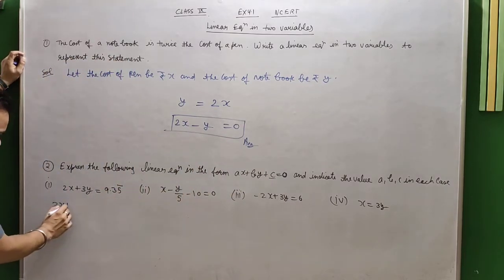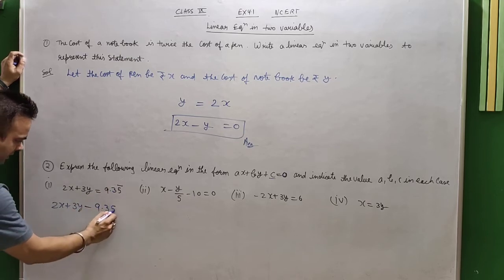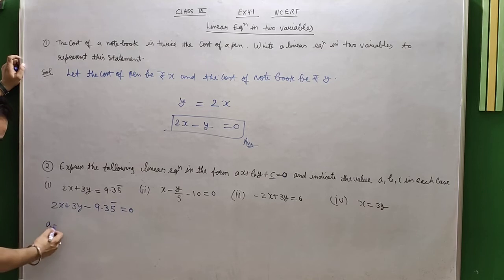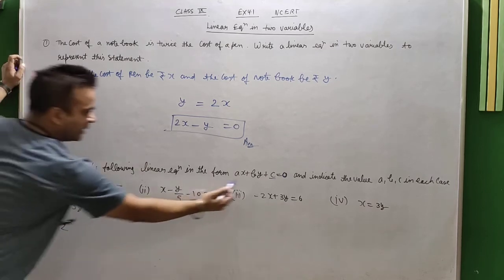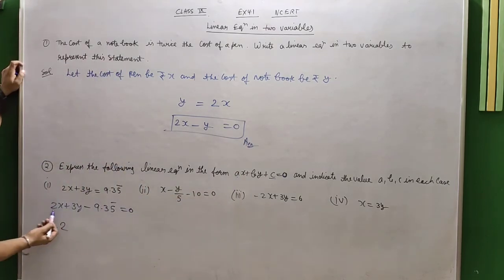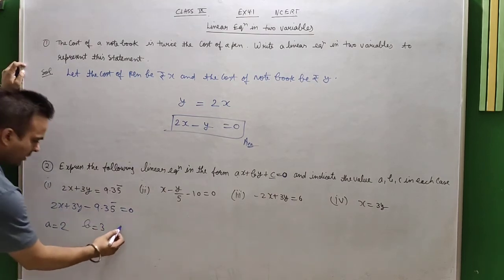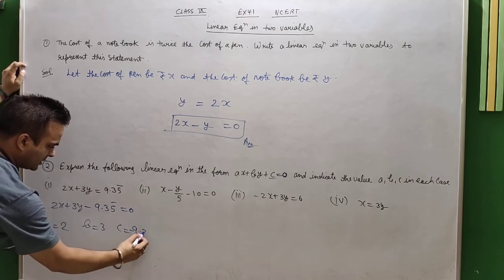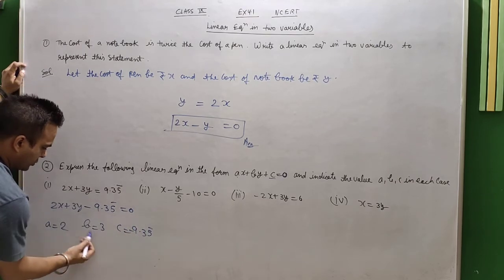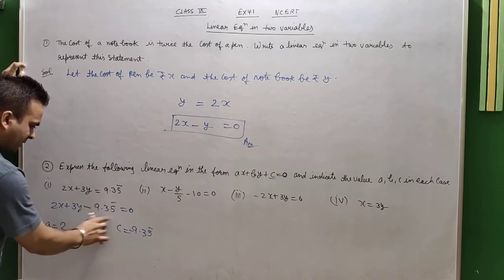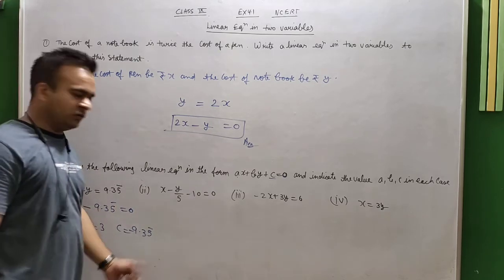Now you can see 2x plus 3y equals 9.35, which you will also shift here. Now what will the values be? The coefficient of x is a, which is 2. The coefficient of y is b, which is 3. And c value is minus 9.35. Okay, minus sign, students, don't forget. You have to write the same with the same sign.